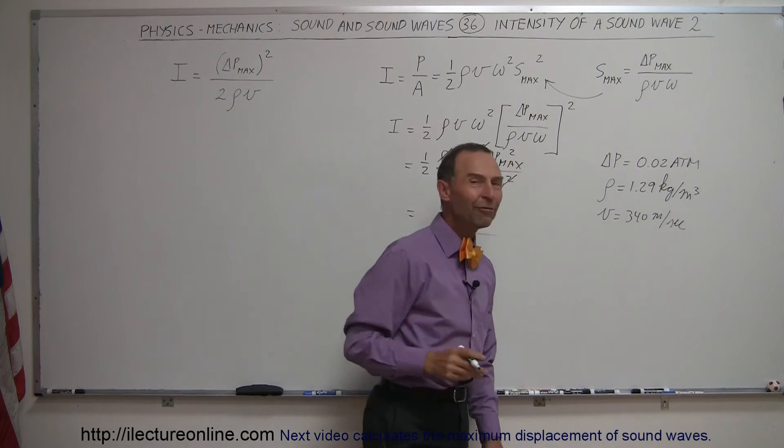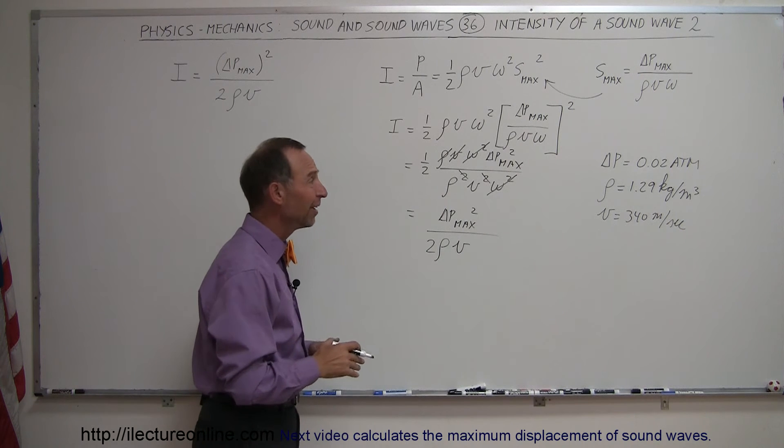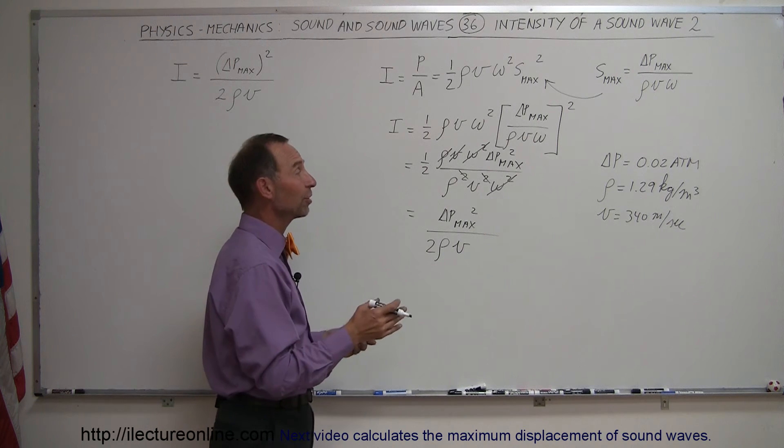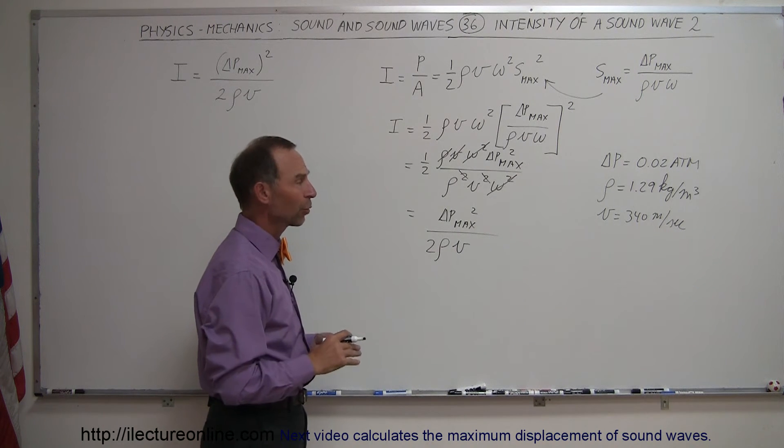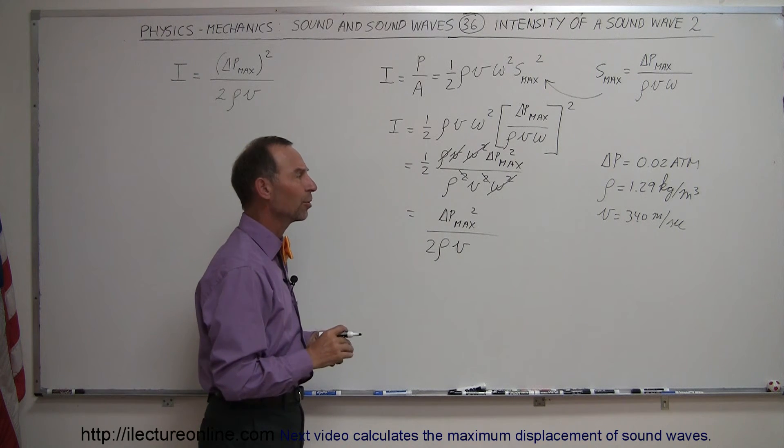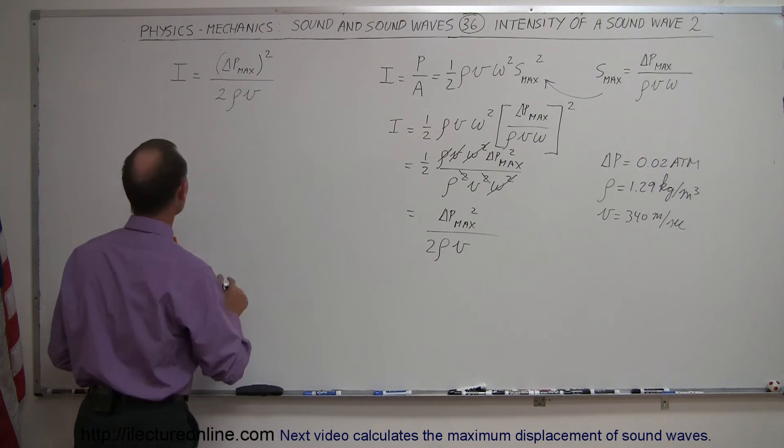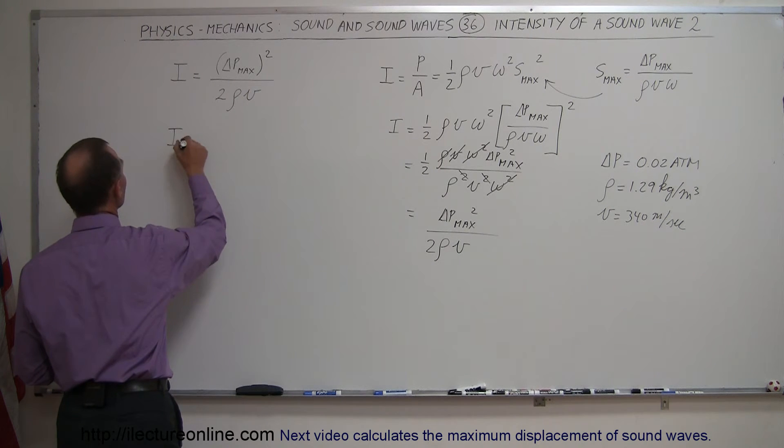So interestingly enough we can find the intensity of a sound wave simply by knowing the pressure difference in the wave. Of course density is pretty standard and velocity of sound in air is pretty standard, so by just knowing that we should be able to calculate the intensity of sound in air.